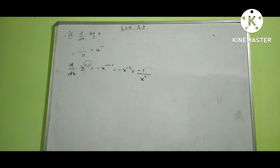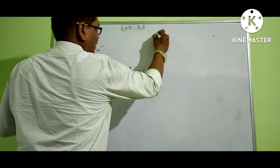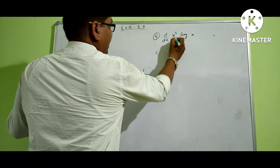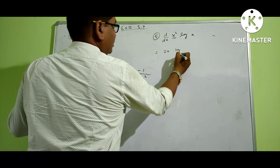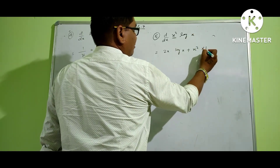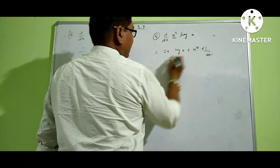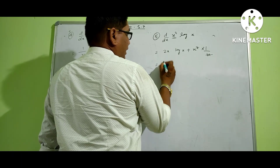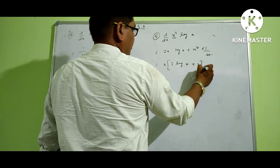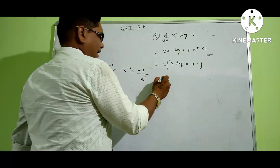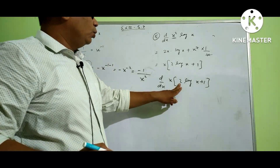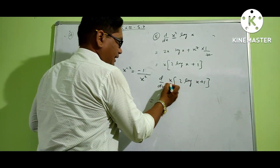Number 5: find the second derivative of x squared log x. Using the product rule: derivative of x squared is 2x, times log x as it is, plus x squared as it is, times the derivative of log x which is 1 by x. Taking x common gives x times the quantity 2 log x plus 1. So the first derivative is x times (2 log x plus 1).